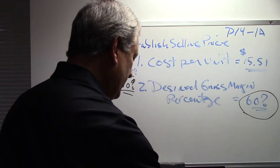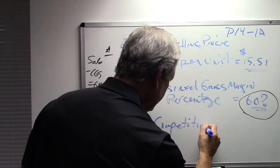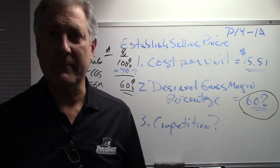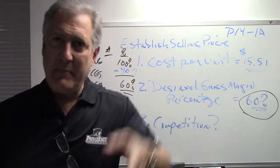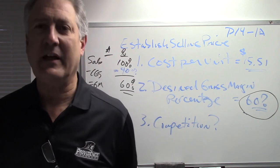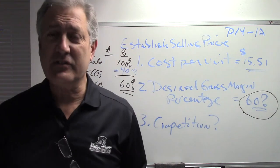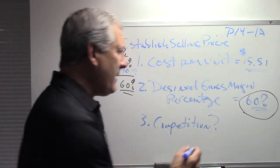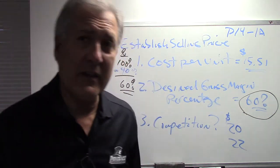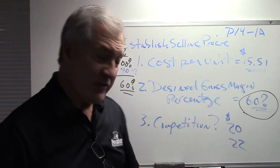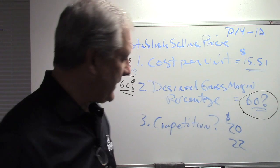The third thing a company needs to know when establishing a selling price is competition — what is the competition doing? If a competitor is selling the identical product for $20 and you set your price at $22, you're not going to do very well. So we need to know what the competition is doing.